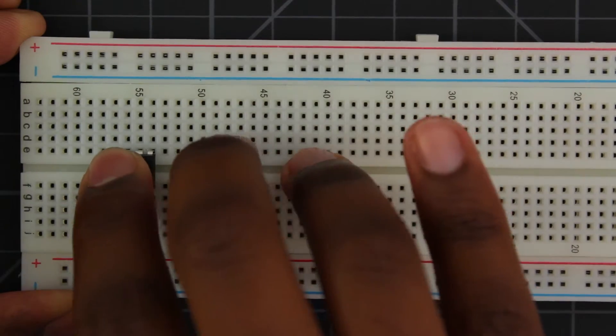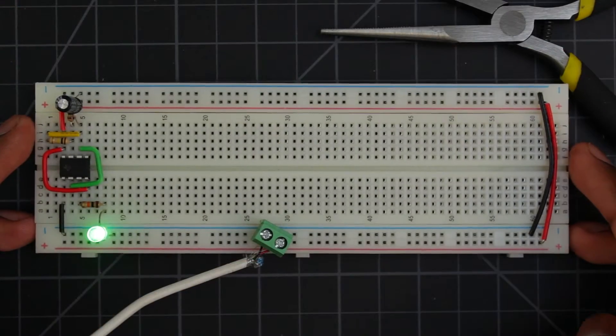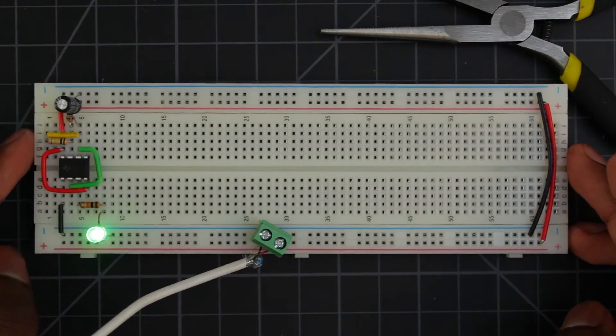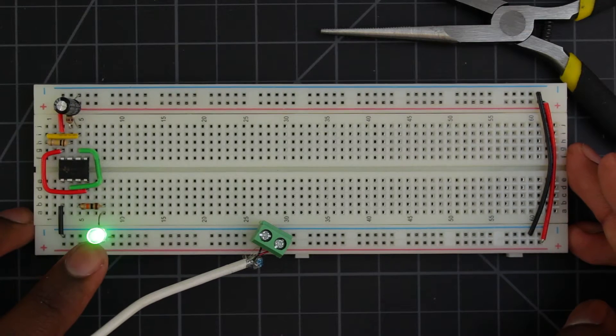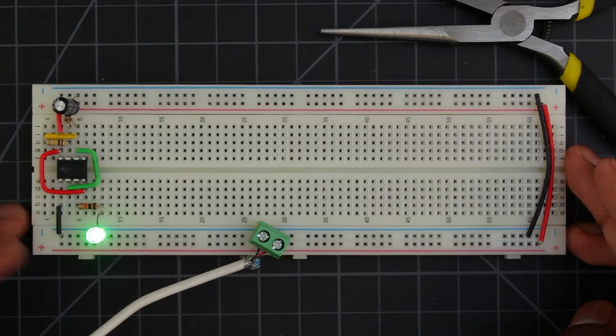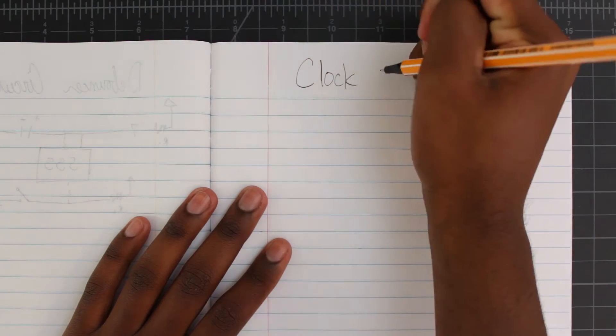Here's our current clock module. I just rebuilt it on a new breadboard. As you can see, it works fine. It creates a stable square wave with a 50% duty cycle. However, as our CPU gets more complicated, we will need a more flexible clock.